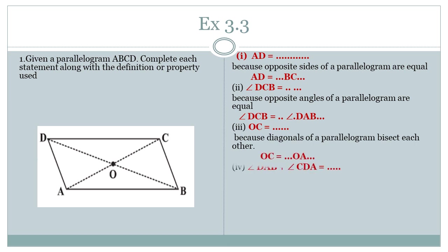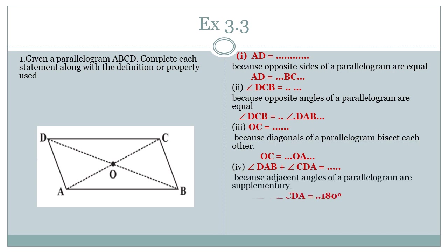Last part: angle DAB plus angle CDA. In the figure, both of these are adjacent to each other. We know the sum of adjacent angles is 180 degrees, meaning they are supplementary. So their sum will be equal to 180 degrees.